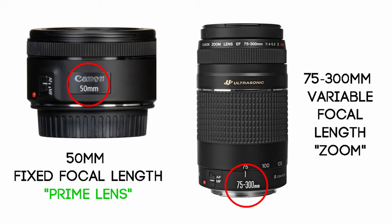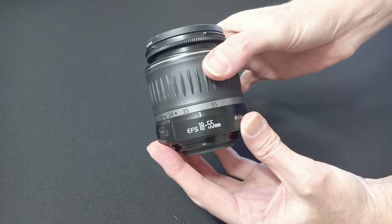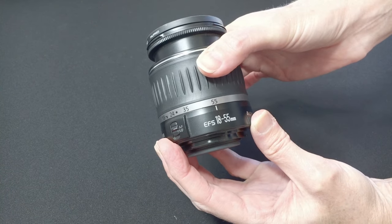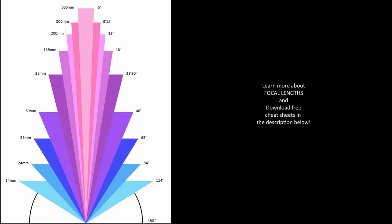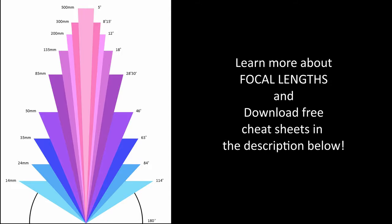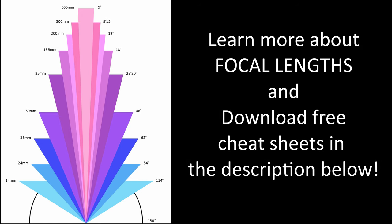When you see a range of numbers, such as 18-55mm or 75-300mm, it means the focal length is variable — it has a zoom. A zoom lens allows you to switch between focal lengths so you can shoot different subjects in different scenarios without changing lenses as often. If you want more in-depth information about focal lengths and the differences between wide-angle, standard, and telephoto lenses, there is a link in the description.